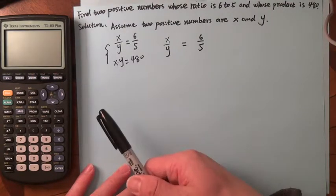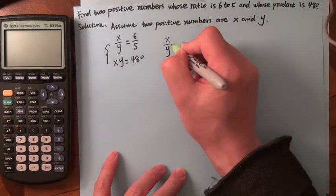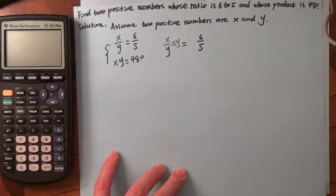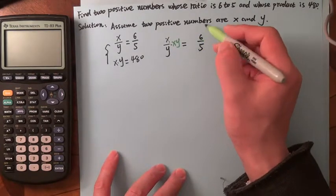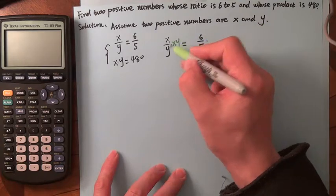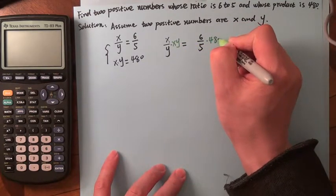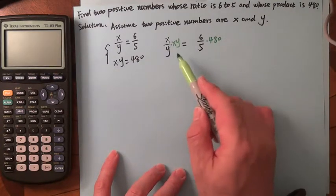What we do is multiply the left-hand side by XY, and the right-hand side you can also multiply by XY. But you know X times Y is 480, so the left-hand side is (X/Y) times XY, and the right-hand side is (6/5) times 480 because they are equal.